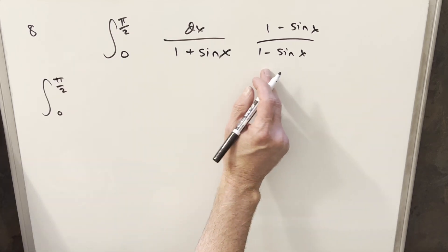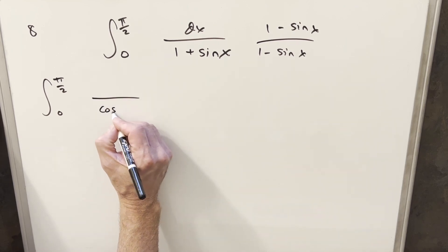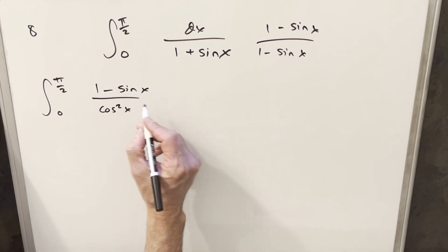When I multiply this up in the denominator, it's going to be 1 minus sine squared x. But 1 minus sine squared x is the same thing as cosine squared x. And then we'll just bring this 1 minus sine x into the numerator.